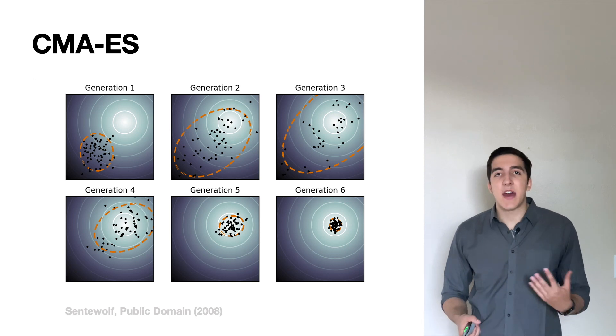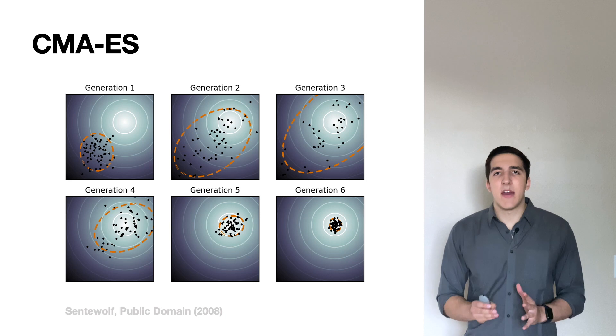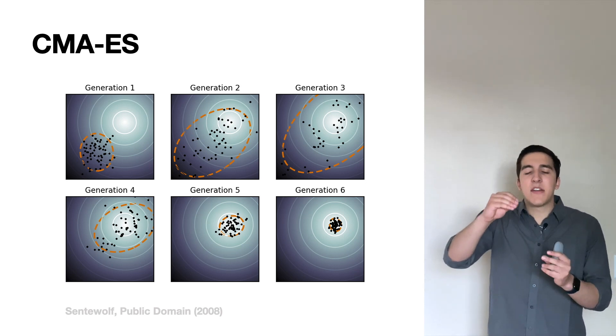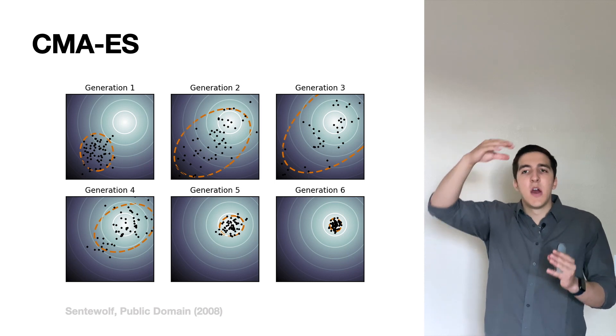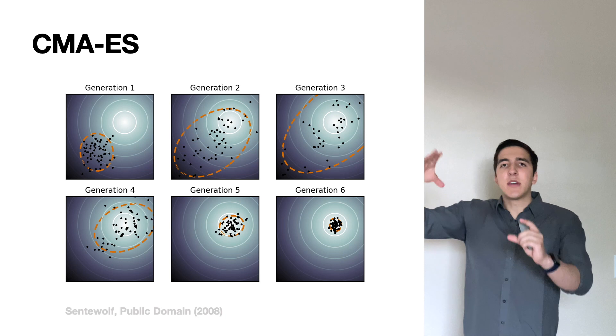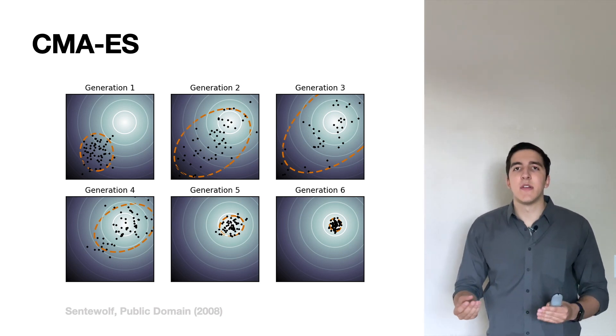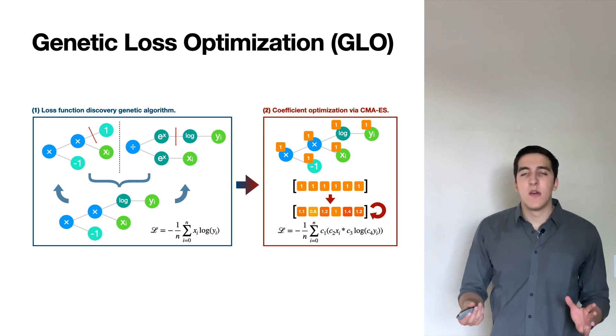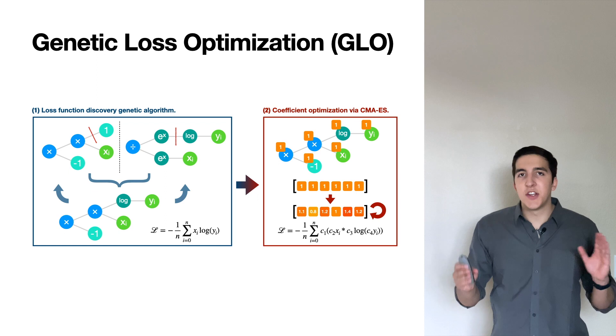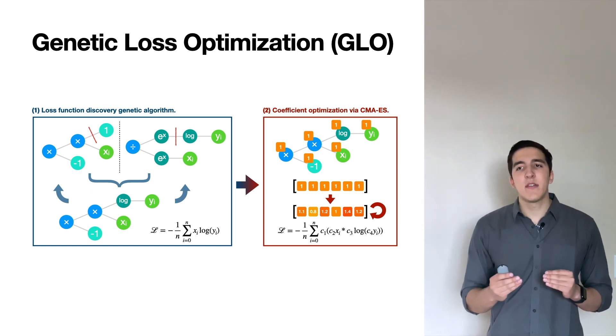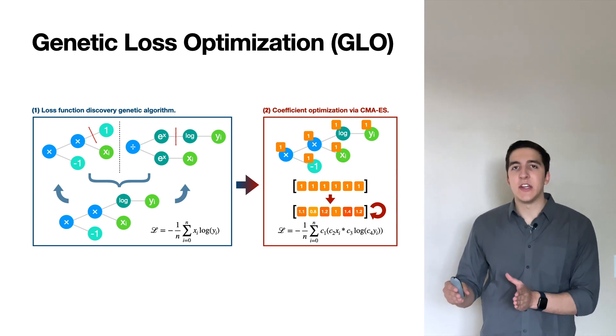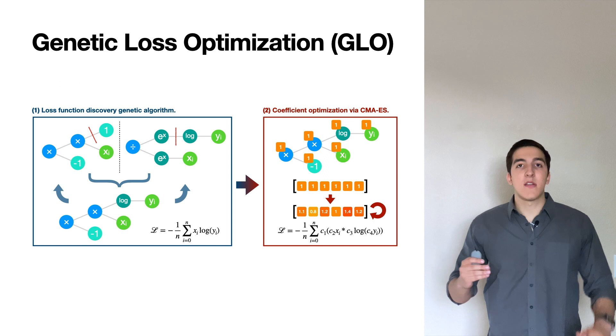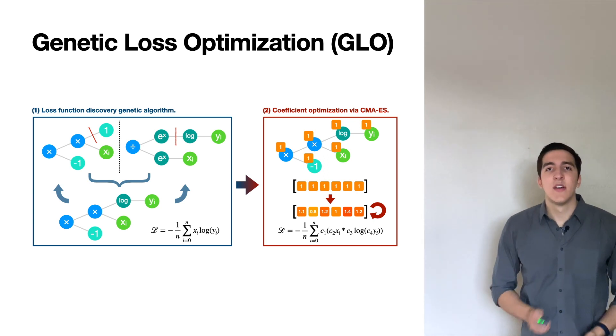So CMAES, Covariance Matrix Adaptation Evolutionary Strategies, are a really great family of algorithms. They're black box optimizers for continuous vector optimization. They operate by having a mean and a covariance matrix that represents a Gaussian distribution around this mean. This distribution and the mean gradually move and shift over generations to try to fit the distribution that you want and get the best result. So how does this end up working overall? We have an evolution of structure using a genetic programming inspired approach where our functions are modeled as trees. And then we have a second step where we perform continuous optimization on the coefficients that are implicitly in these structures. And this gives us a two-step approach that gives us pretty good loss functions and then even better loss functions.